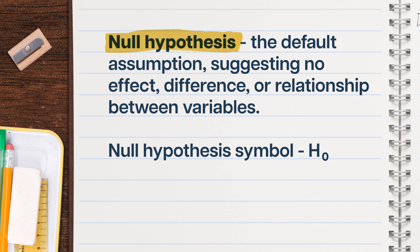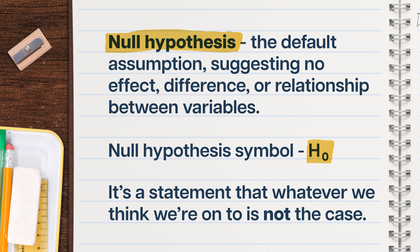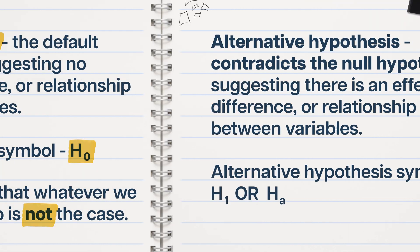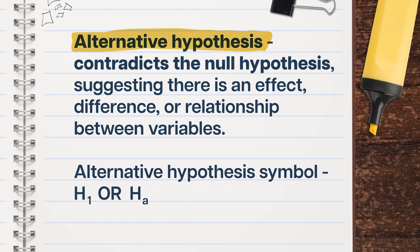The null hypothesis is sort of the opposite of our hypothesis, represented by this symbol. It's a statement that whatever we think we're onto is not the case. By assuming that our intuition is actually not on the money, the null hypothesis gives us a model of the world to compare our data to that holds off on jumping to conclusions. At the same time, our initial hypothesis gets called the alternative hypothesis, represented by this symbol.